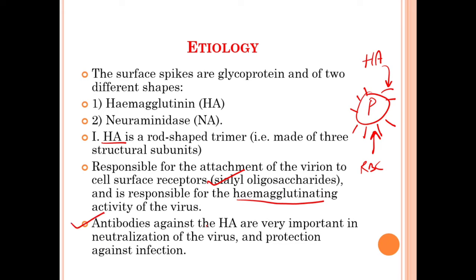Antibodies against HA are very important in neutralization of the virus and protection against infection. If antibodies are not produced in that particular infected poultry or wild bird, RBCs will start to coagulate due to the agglutinating activity, and the bird will die.